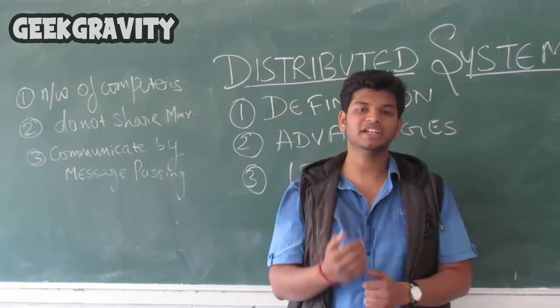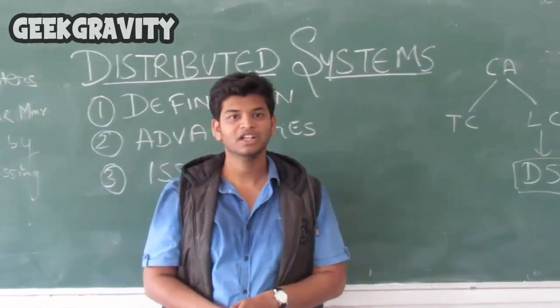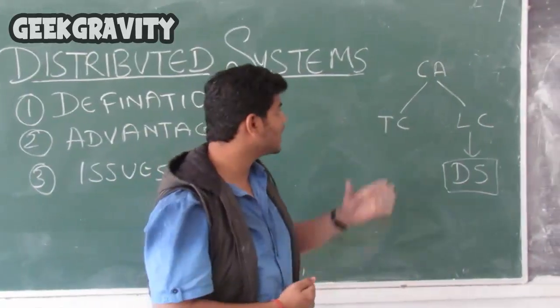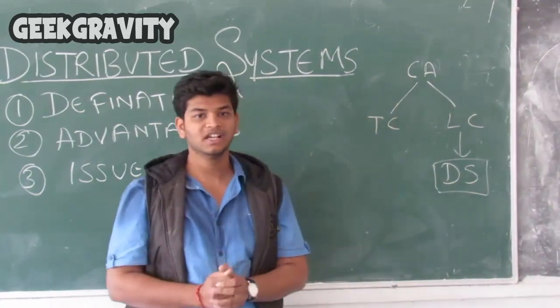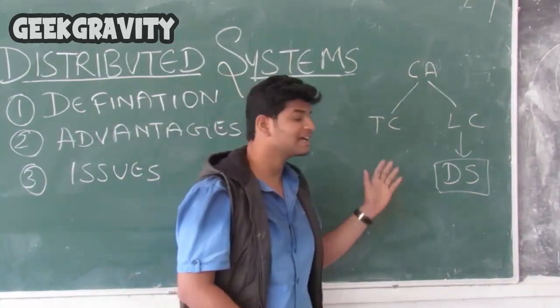Let us see how distributed systems came into existence. We know that computer architecture is divided into two parts. First is tightly coupled and second is loosely coupled.